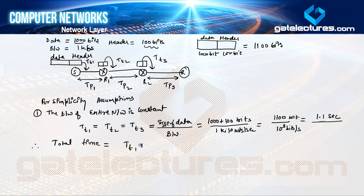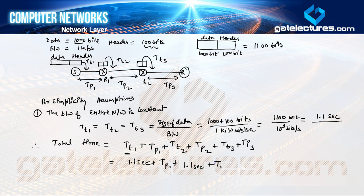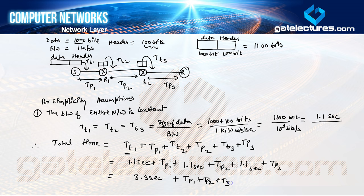The total time for transmitting this data packet is: t1 + p1 + t2 + p2 + t3 + p3. Ignoring queuing time, since we only consider transmission time and propagation time, this becomes: 1.1 + tp1 + 1.1 + tp2 + 1.1 + tp3, which equals 3.3 seconds plus tp1 plus tp2 plus tp3.